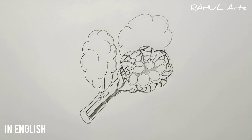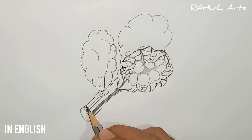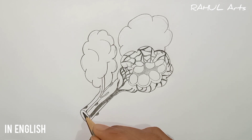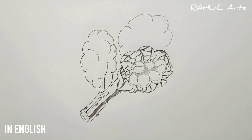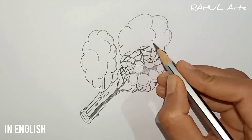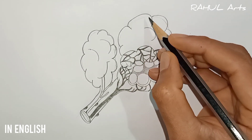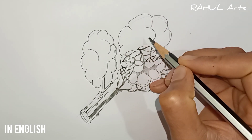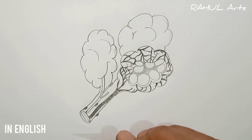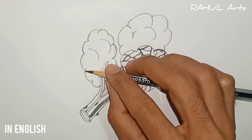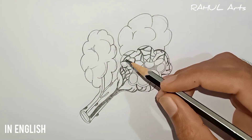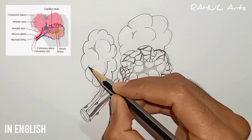After highlighting those capillary beds, draw some semi-circle-like structures — these are the mucus glands. Draw an inner oval on the lower part of the stem, which is the mucosal lining. Now on the second cloudy structure, draw some bubble-like structures to make them look like alveolar sacs, then highlight or shade them.